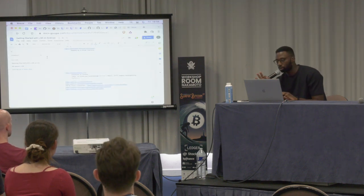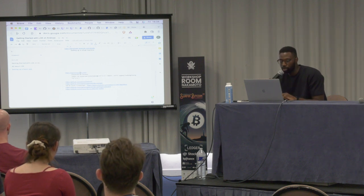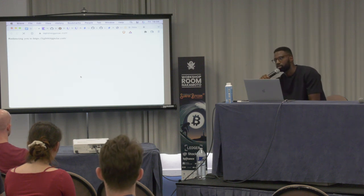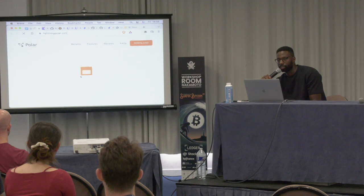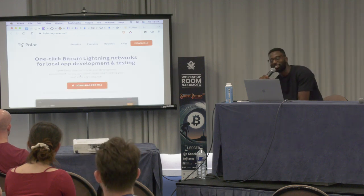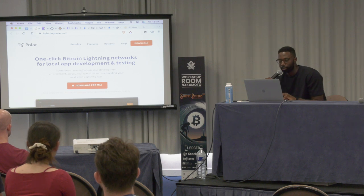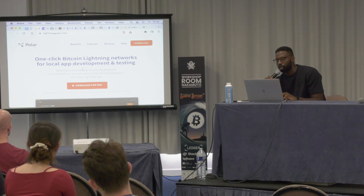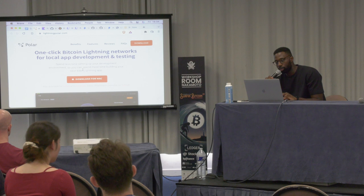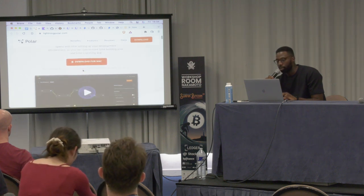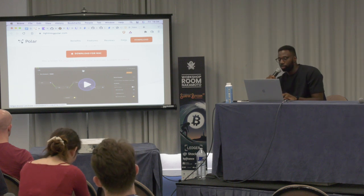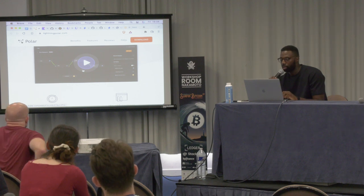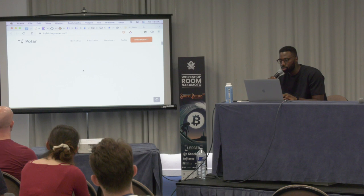One other useful tool for local development is something called Polar. Polar lets you spin up a local lightning network — a local lightning environment where you can have a Bitcoin Core node running in regtest mode and open channels with lightning nodes of different implementations. It does have a dependency on Docker, but it has the three implementations: LND, Core Lightning, and obviously Bitcoin Core.